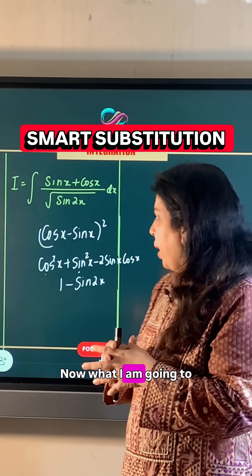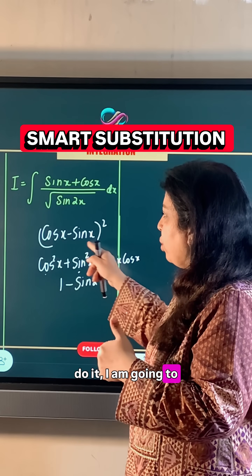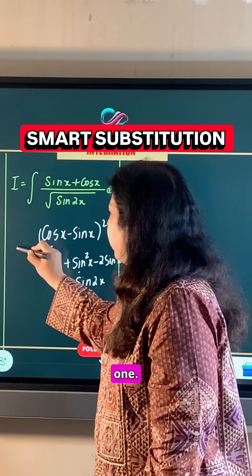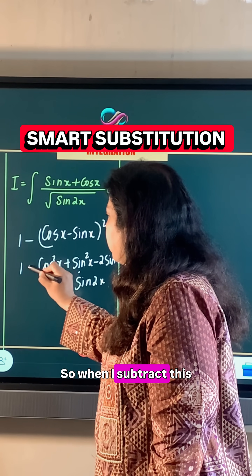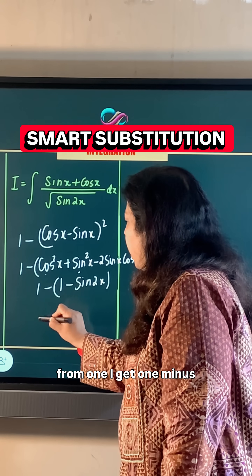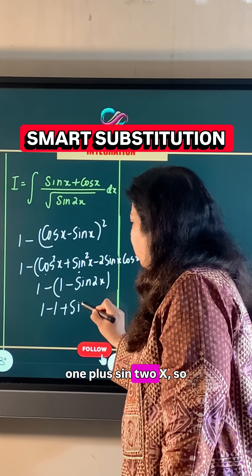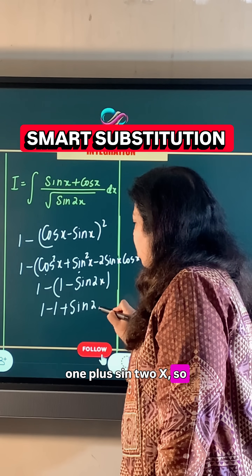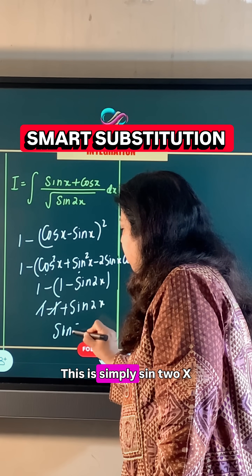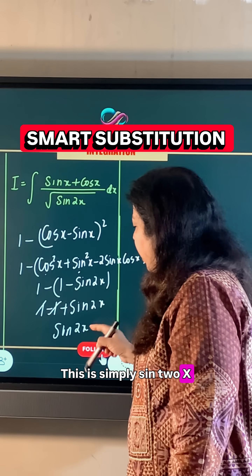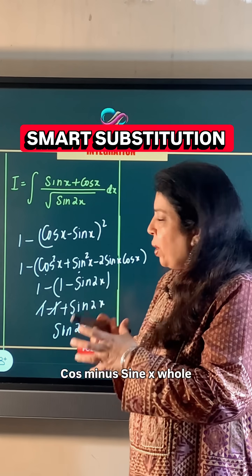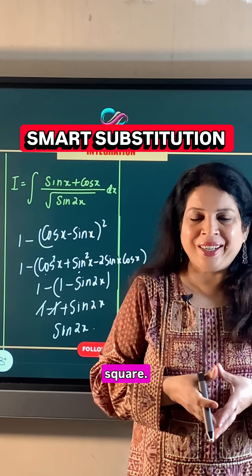Now what I am going to do is subtract this expression from 1. So when I subtract this from 1, I get 1 minus 1 plus sin 2x. So 1 and 1 are cancelled, this is simply sin 2x, and its value is 1 minus cos x minus sin x whole square.